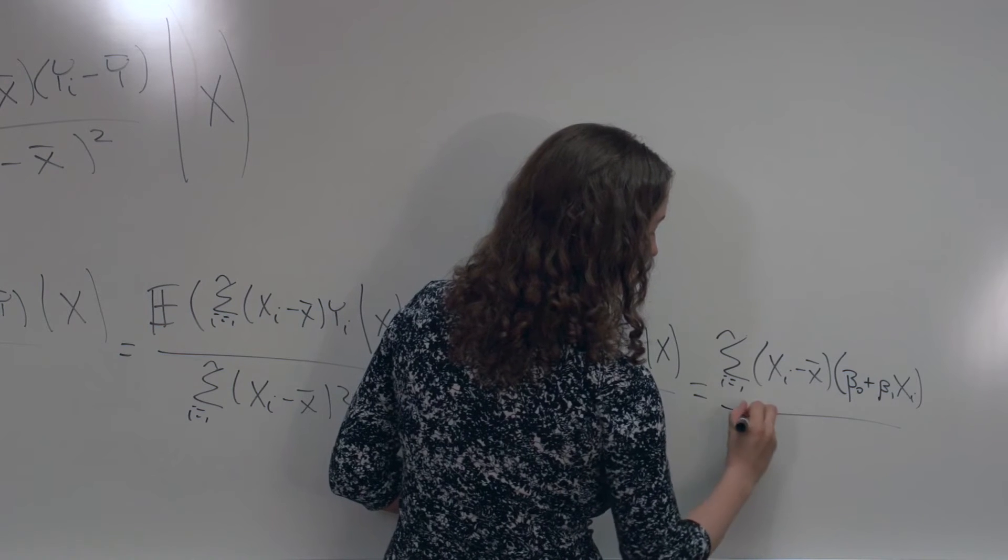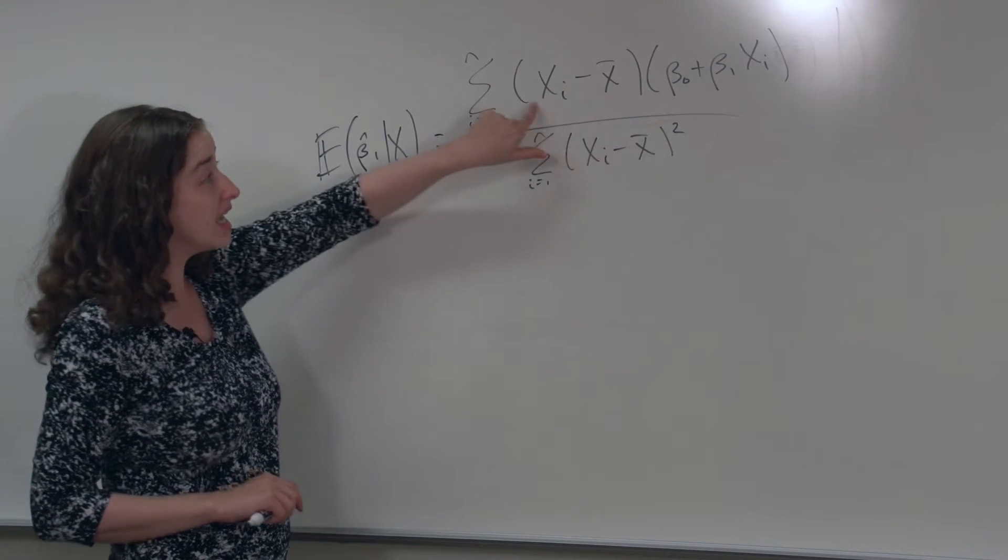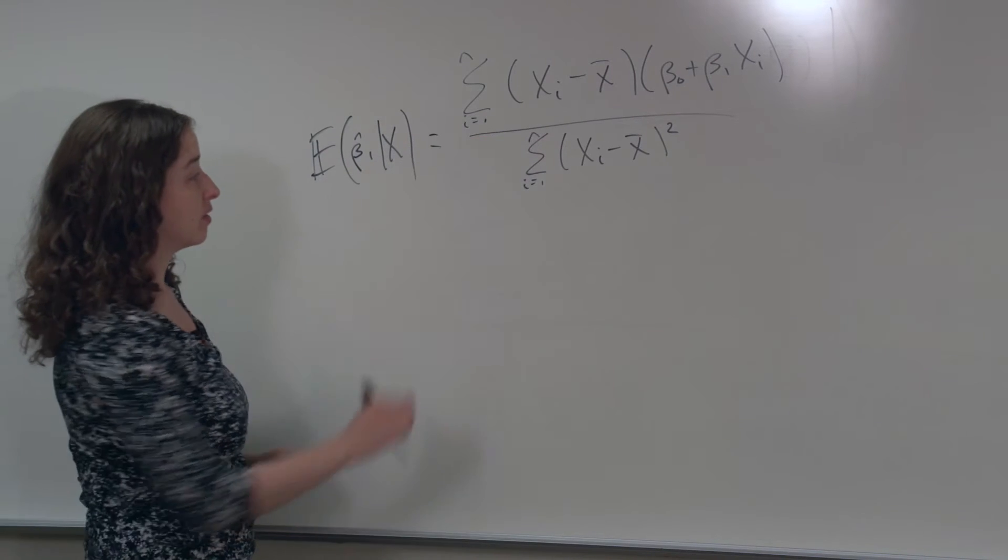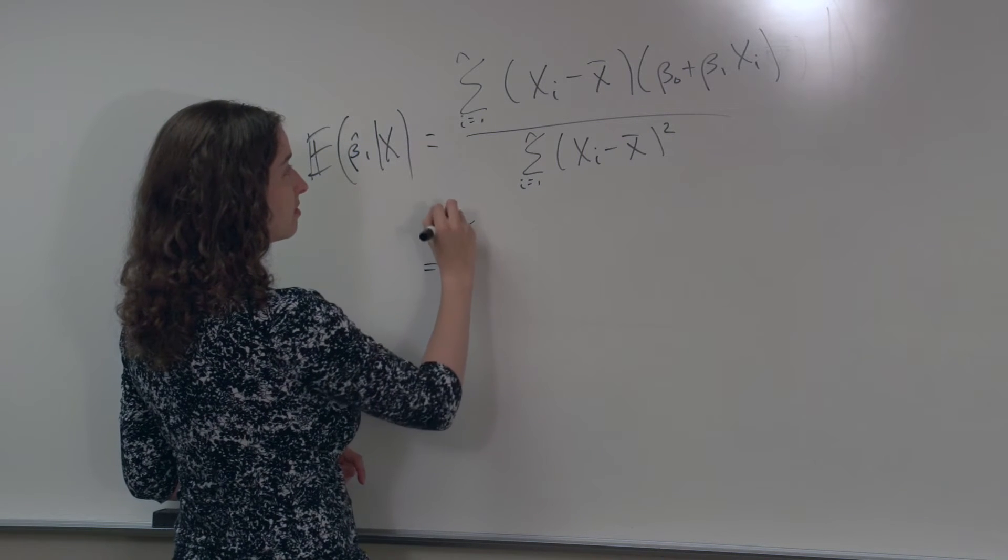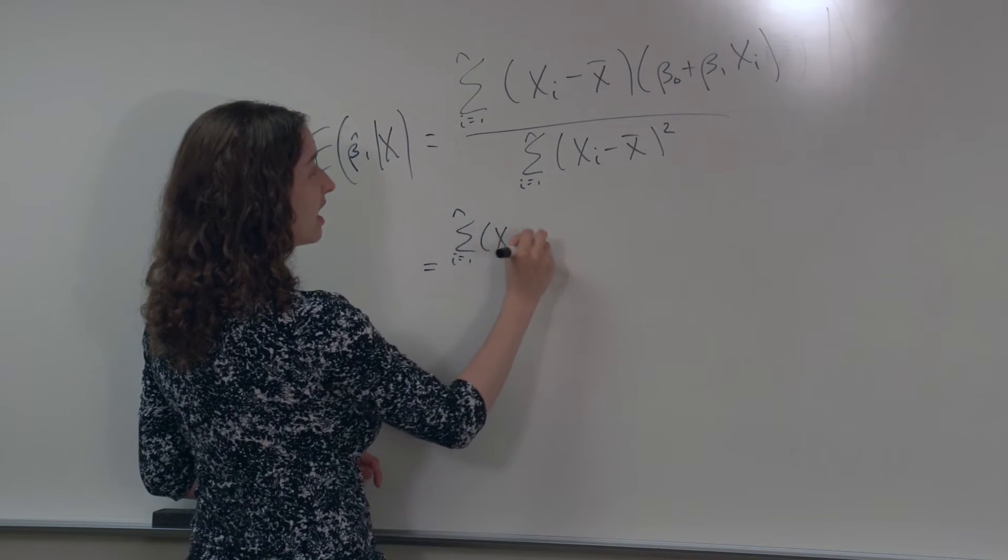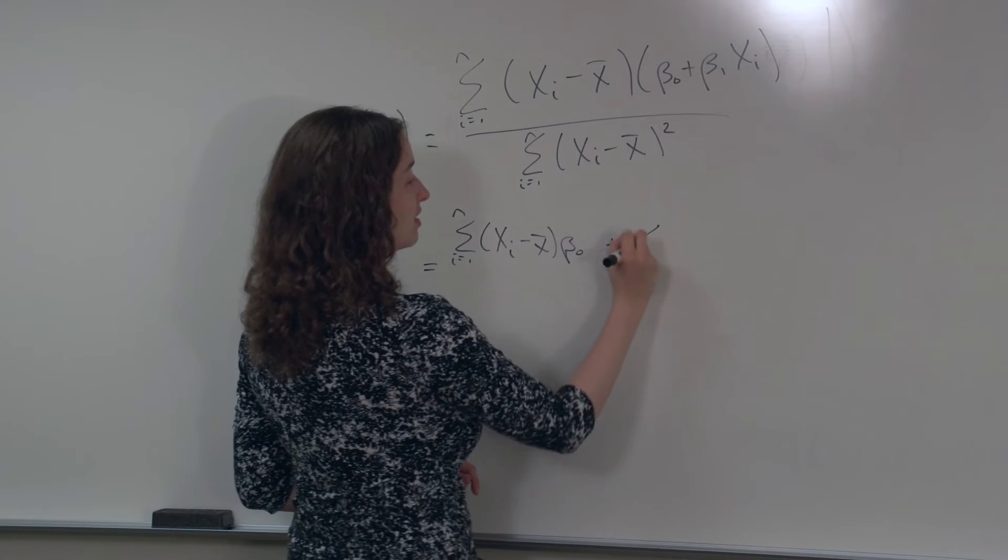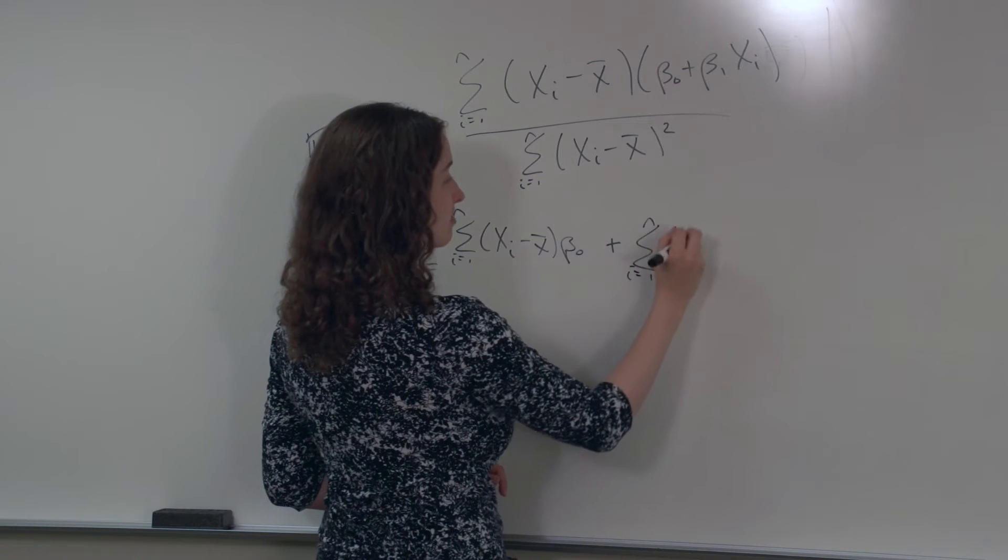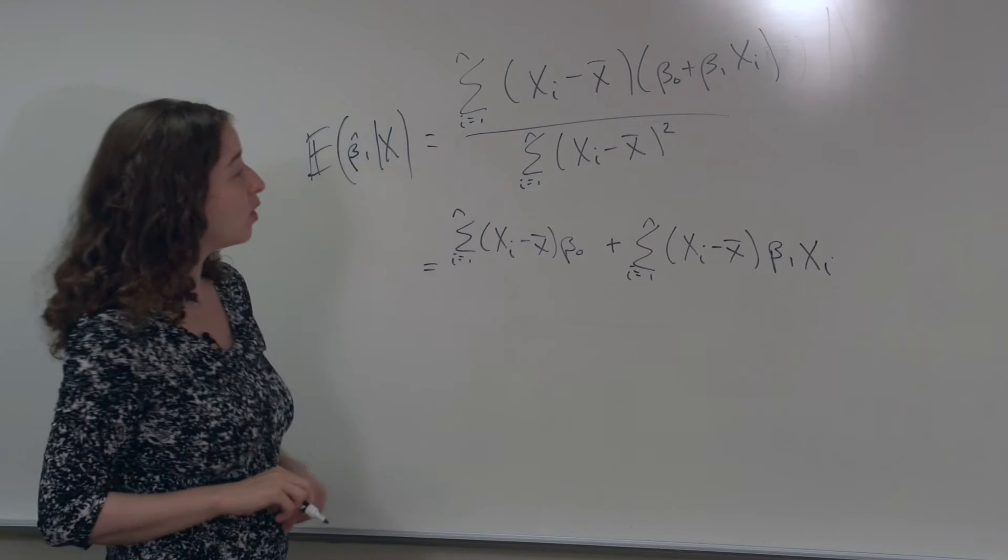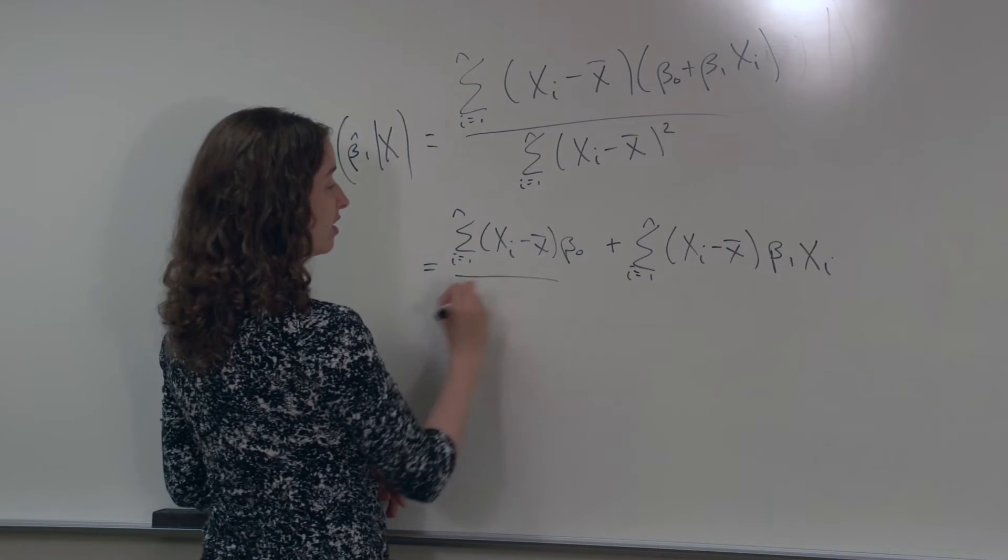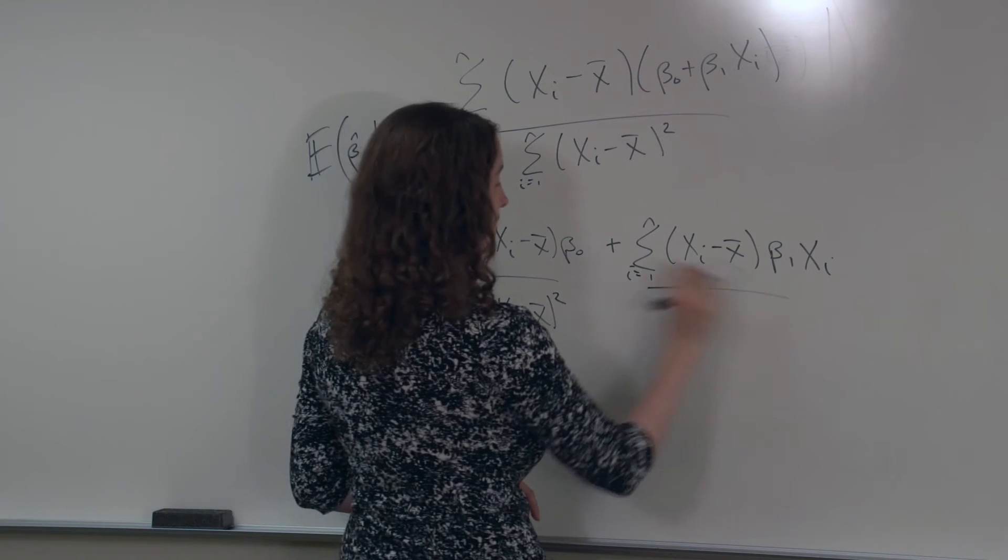So what I have here is the sum of xi minus x-bar times beta 0 plus beta 1 xi. The whole thing divided by the sum of the square differences on x-bar. So what I'm going to do next is multiply this numerator through. What do I have? I have the sum over all the data points of xi minus x-bar times beta 0 plus the sum over all the data points of xi minus x-bar times beta 1 times xi. And the whole thing is divided by the sum of xi minus x-bar squared.